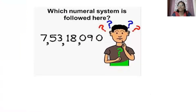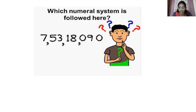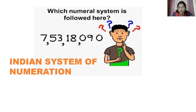So now, which numeral system is followed here? Think — you have the numeral 7,53,18,090. Just observe where the commas are placed and how the periods are separated. In Indian system, the ones period has three places, and then the thousands period has two places only. In international system, both ones period and thousands period have three places each. In this number, the thousands period has only two places — so this numeral is according to Indian system of numeration.